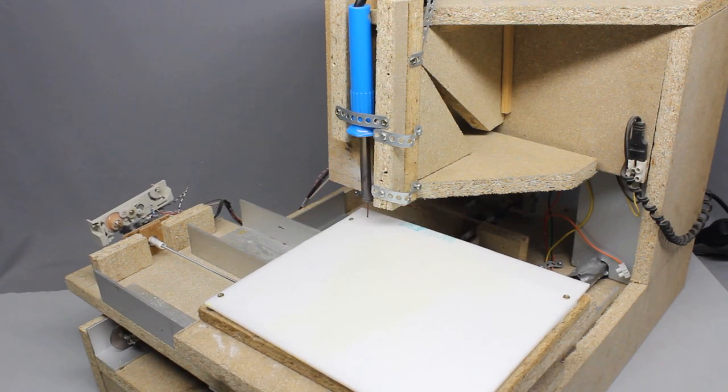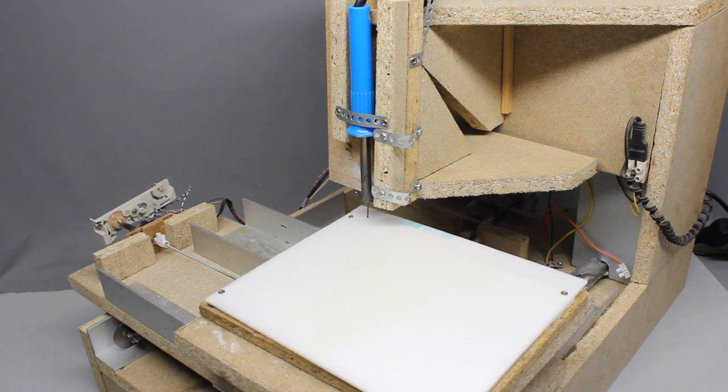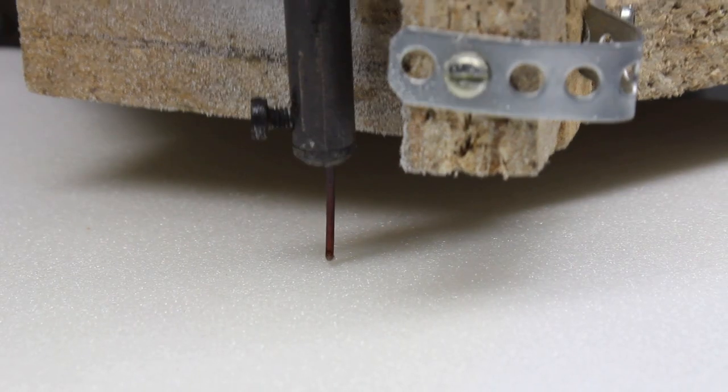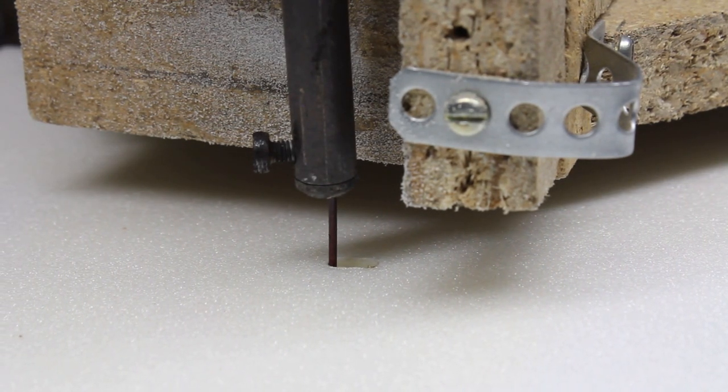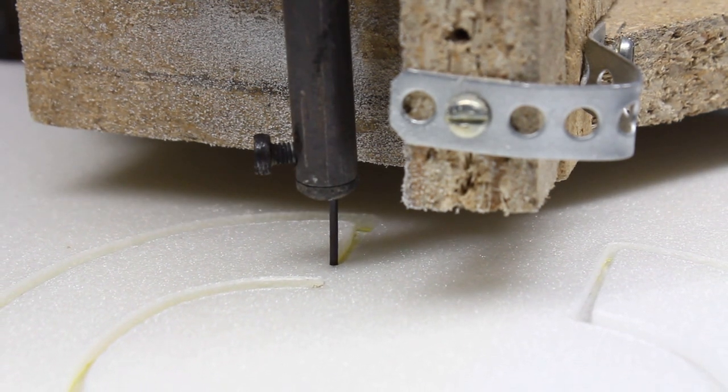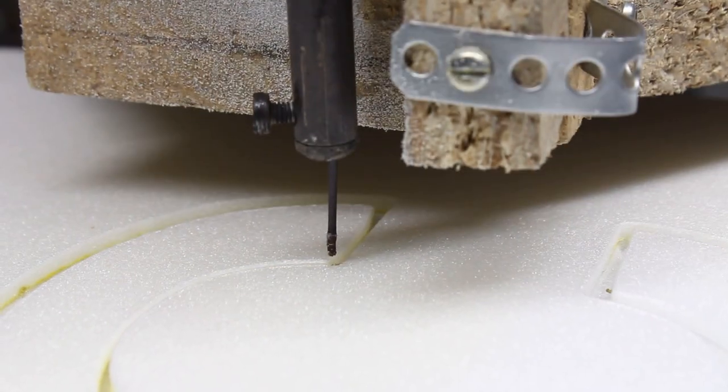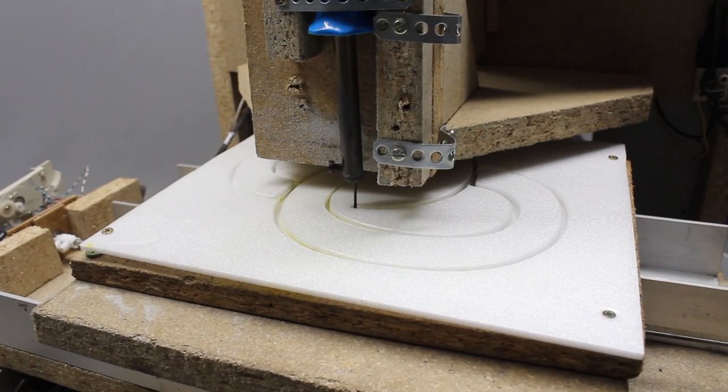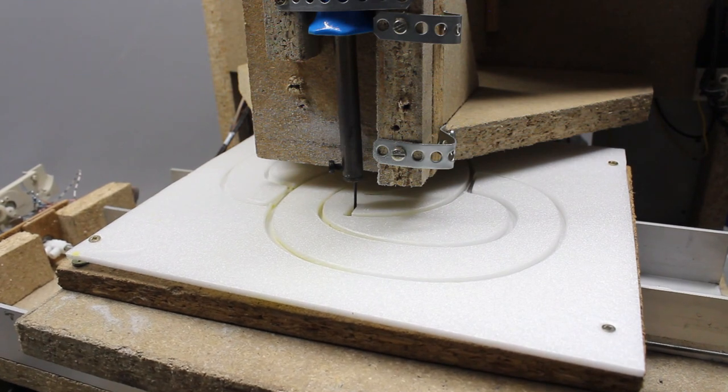You can also melt depron using a soldering iron with a 1mm copper wire at its tip. That's much more quiet. The heat at the tip depends on the length of the copper wire and it must be enough to melt the depron, but no more. Too much heat widens the cutting line and increases the bad smell of evaporating plastics.